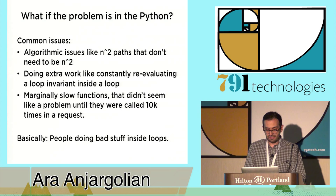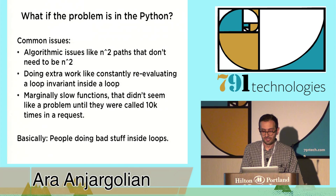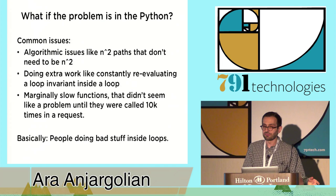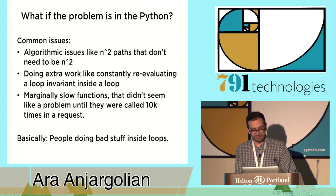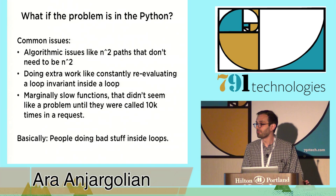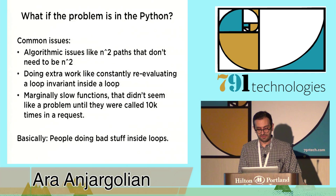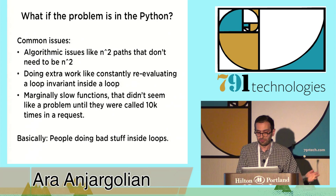Performance on the Python or non-SQL side basically comes down to people doing bad stuff inside loops. Almost nothing is a problem until you do it 1,000 or 10,000 times. You look for your slow function and try to find where it's being called far too many times — 'why does this take a hundredth of a second, except we do it 1,000 times?' Fixing this stuff sometimes means getting weird. Things that make no sense to do, that no sane person would do, until you have a performance problem and need to solve it.